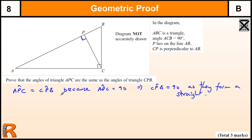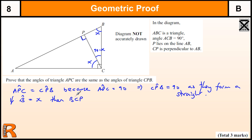Then we're going to try and show that if we call the angle at B as X, then this is going to be 90 minus X. So if angle B equals X, then angle BCP equals 90 minus X. Therefore, angle BCA equals 90 minus (90 minus X), which is equal to X — 90 take away 90 is 0, and minus minus X, which is X.